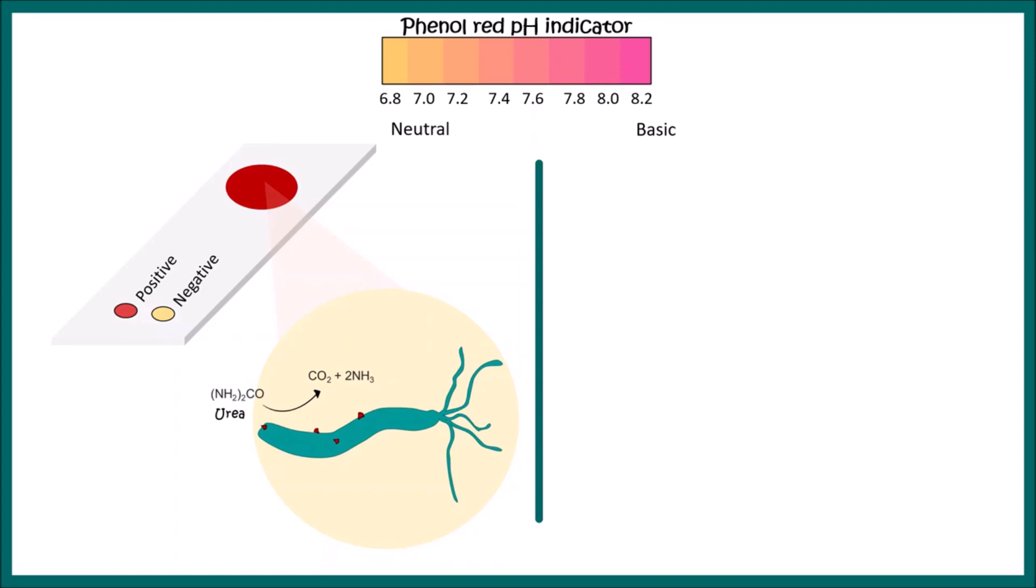This bacteria produces an enzyme known as urease that can convert urea into ammonia. Ammonia is basic. That is why whenever the bacteria is present, the urease enzyme is present and urea gets converted into ammonia. This is why the color turns red, meaning the test is positive.